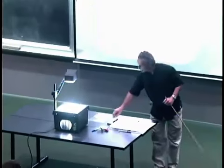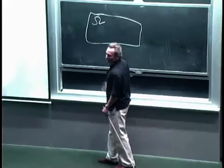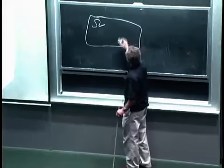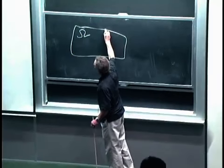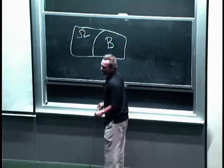So what did we talk about last time? The idea is that we have an experiment, and the experiment has a sample space omega, and then somebody comes and tells us that the outcome of the experiment happens to lie inside this particular event B.